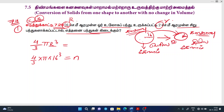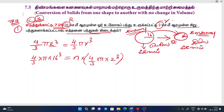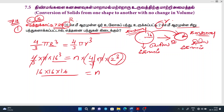2 is equal to n into 4 by 3 pi into r cube. 4 by 3 into pi r cube. 2 cubed — 4 by 3 pi cancel — 14 cubed. That gives us 14 cubed.